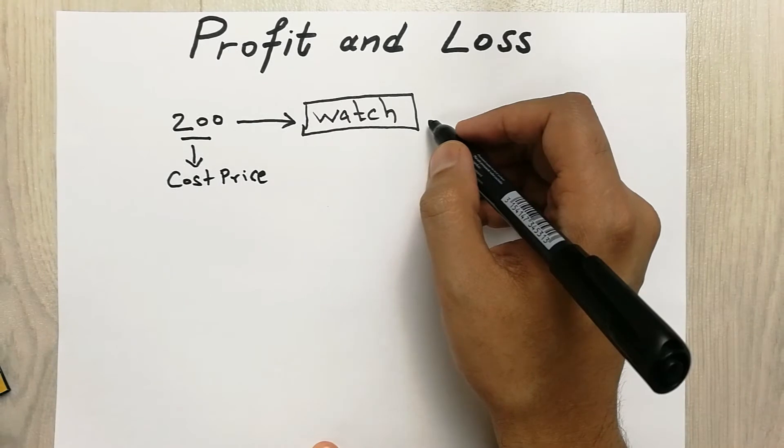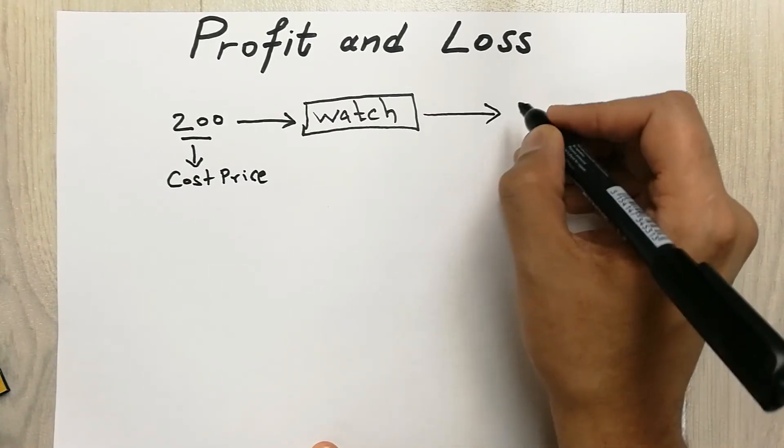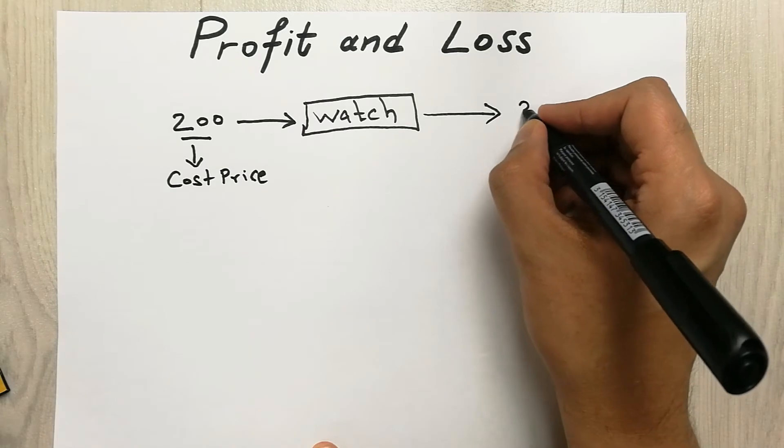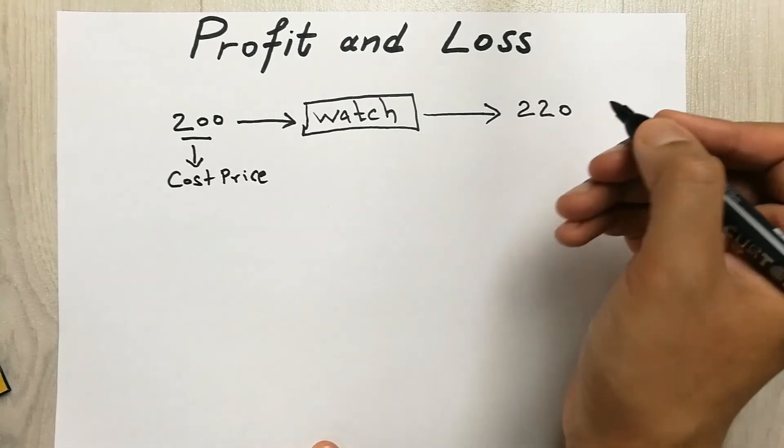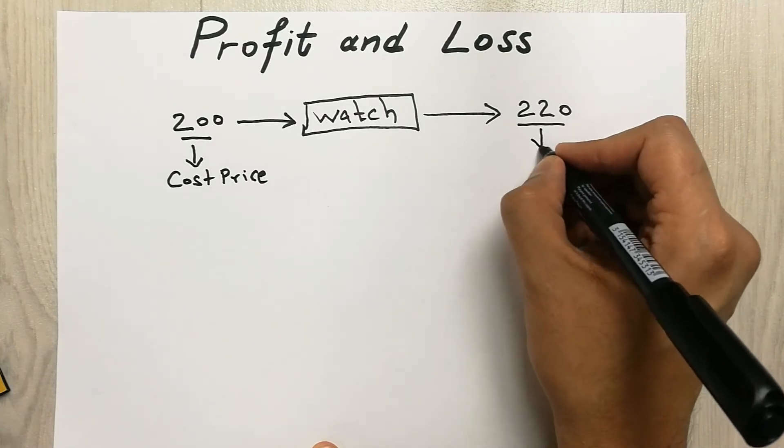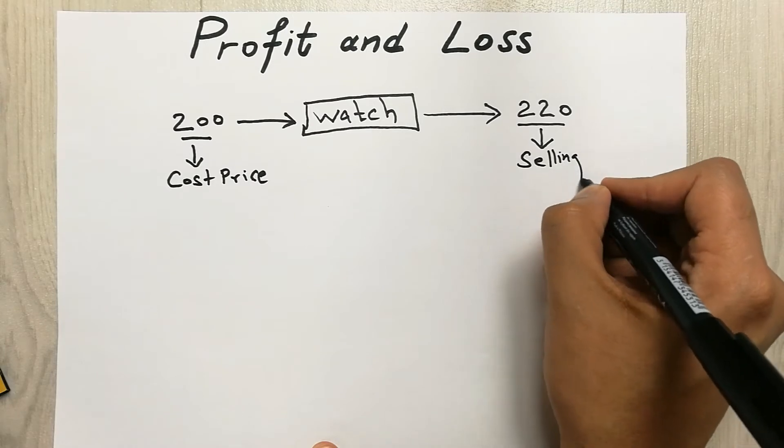And now if you sell this watch, let's say you sell this watch at 220 rupees or dollars or whatever currency, so this is your selling price.